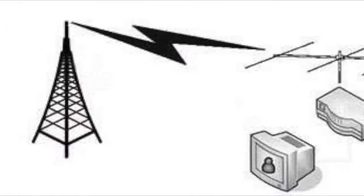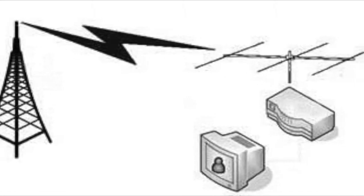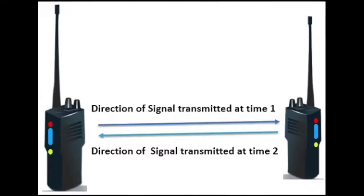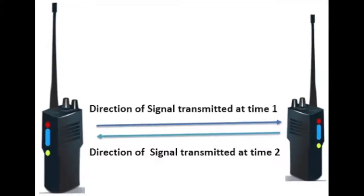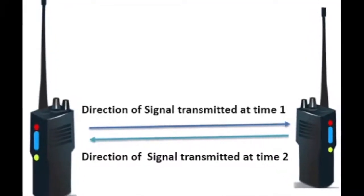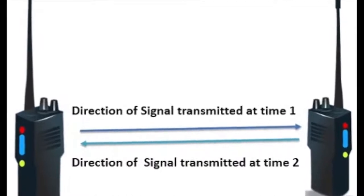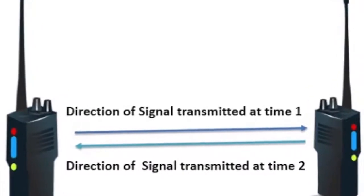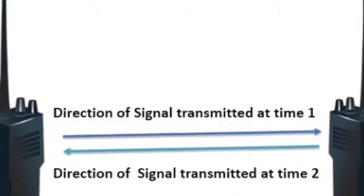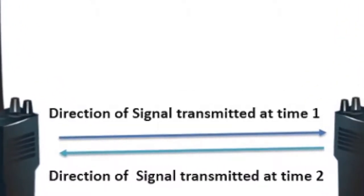Simplex communication is a one-way communication. An example is the radio broadcast system. Half-duplex is a two-way communication but not a simultaneous one. Ham transceivers is the appropriate example for half-duplex communication.